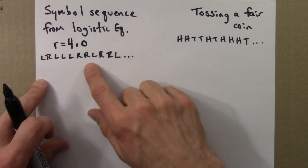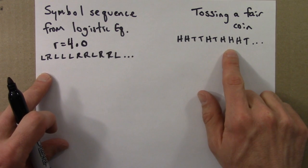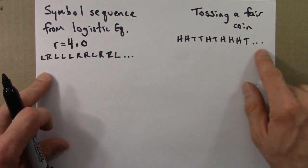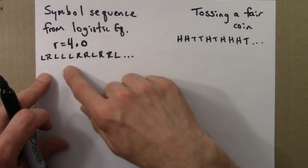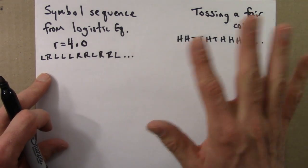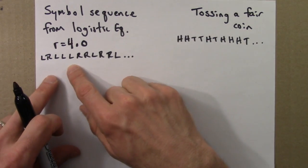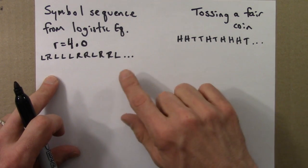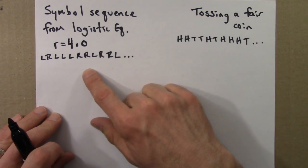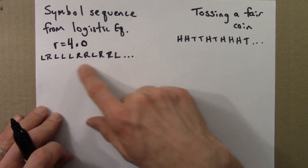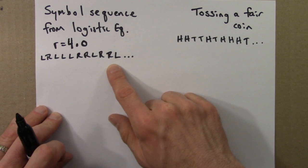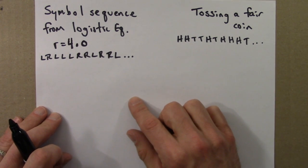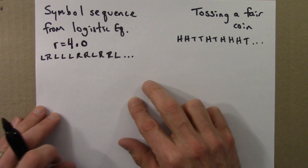I'm going to imagine that we have an infinite amount of data — both sequences done infinitely long. That's a little unrealistic, but it simplifies the discussion. The first thing we might ask: given this infinitely long string of L's and R's, what's the frequency of L and what's the frequency of R?